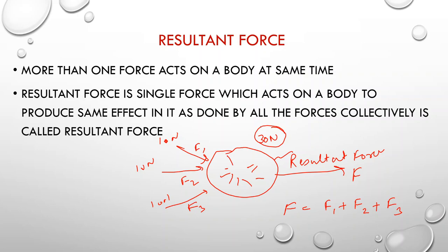When two forces act along the same line in the same direction — for example, Man 1 and Man 2 each applying 10 Newton on a box in the same direction — the box will move with 10 plus 10 Newton, that is 20 Newton. When two forces act in the same direction, the resultant force is the sum of both forces.